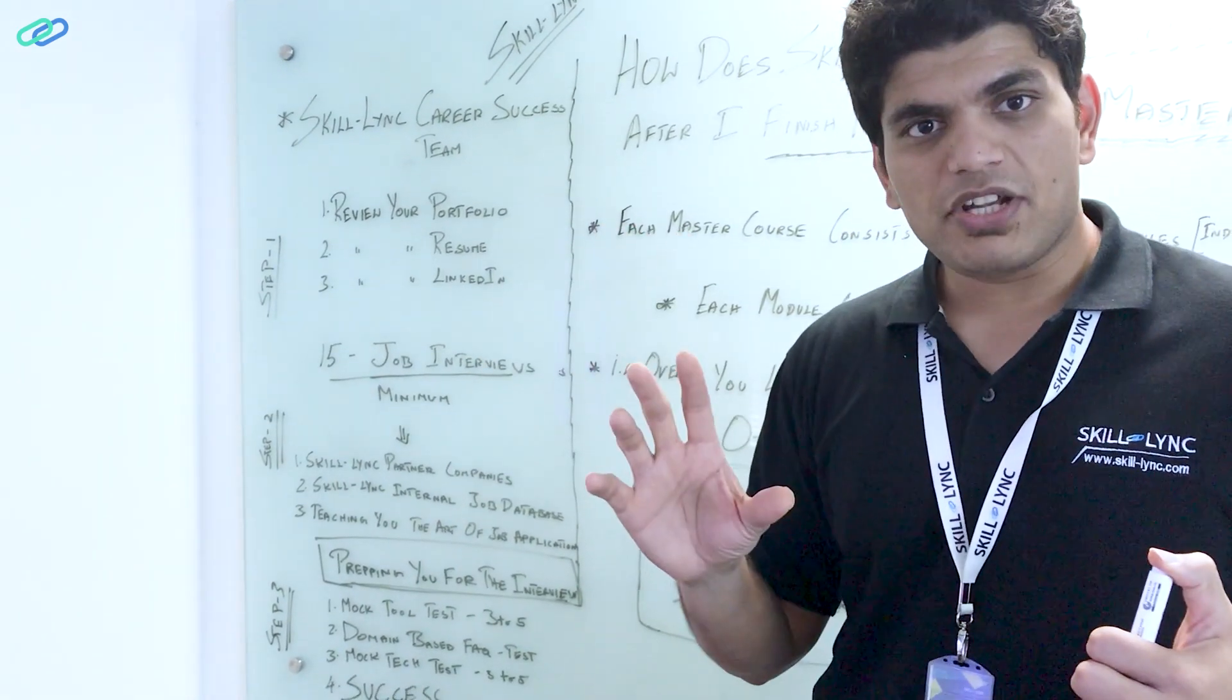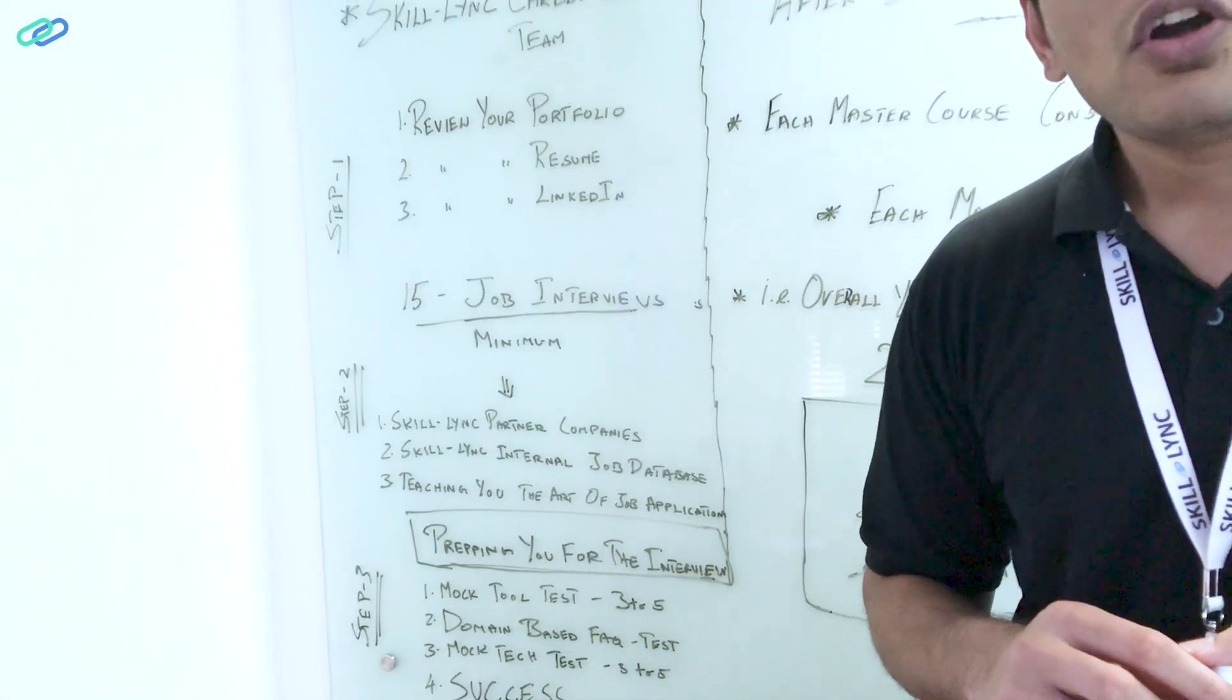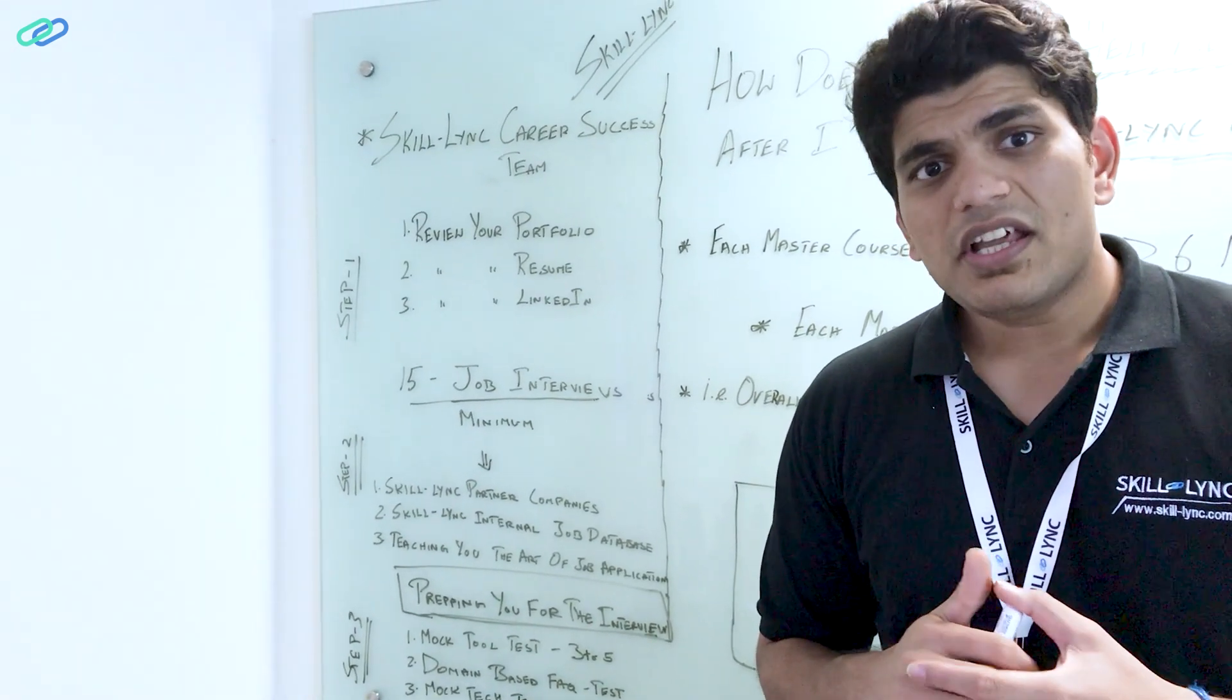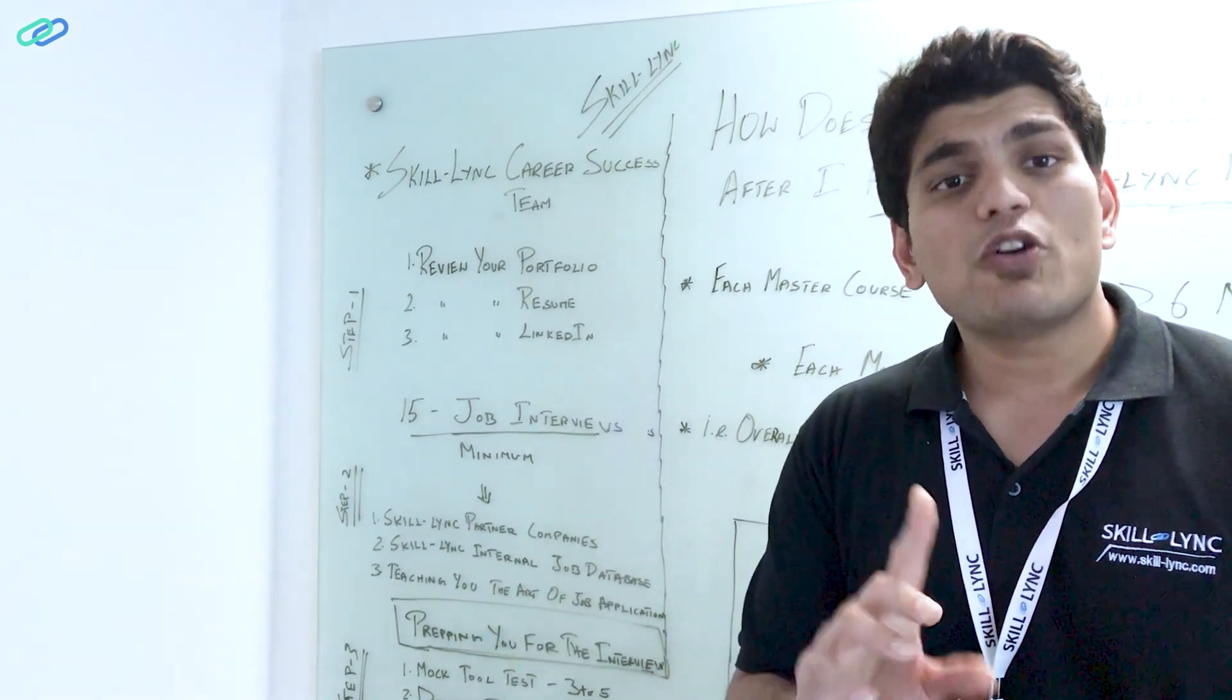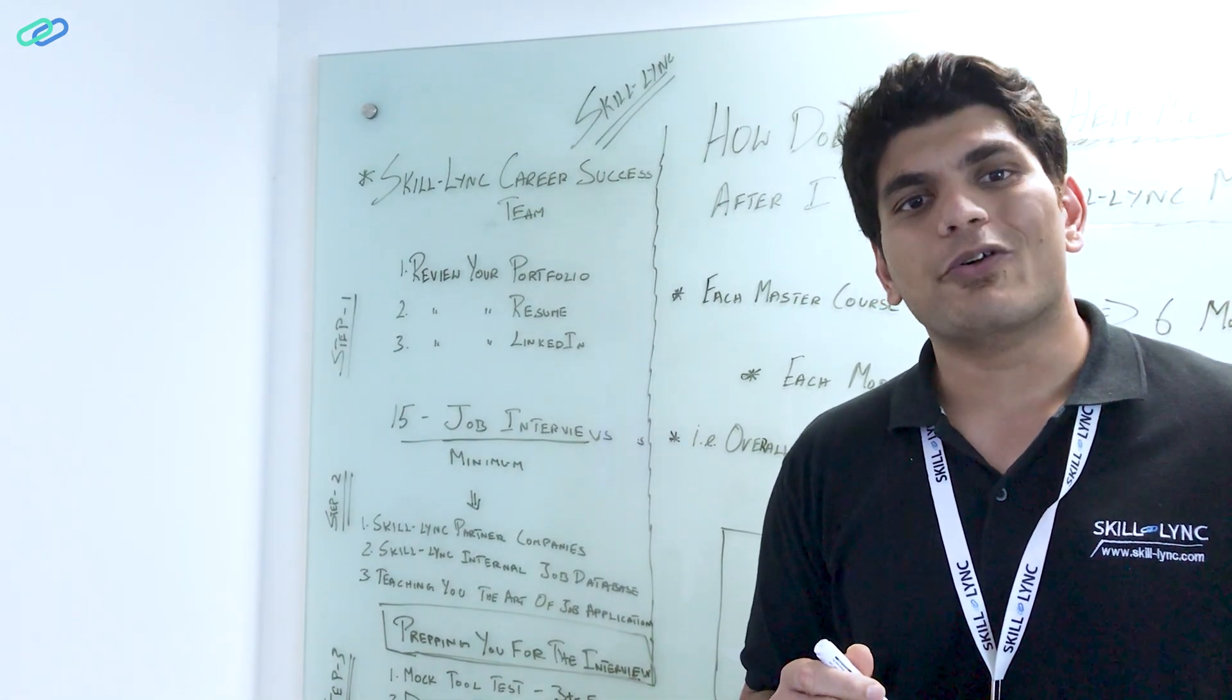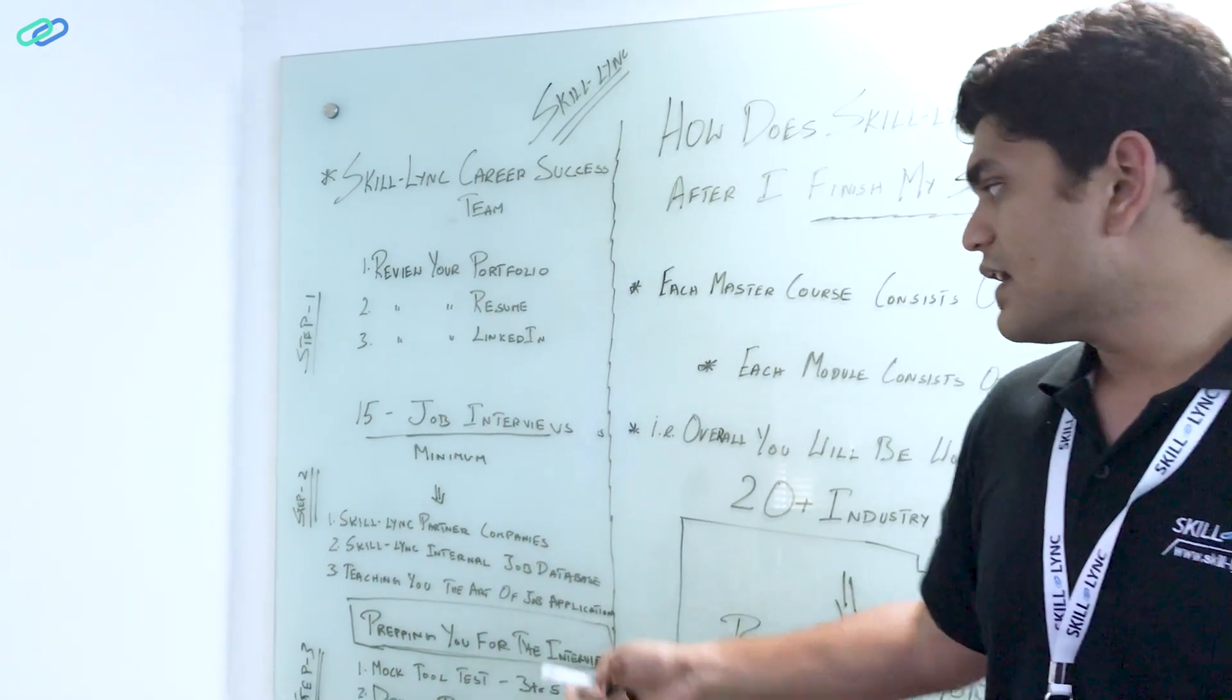Step two is basically getting you 15 job interviews. How do we do that? We basically do it with three steps. The first step is Skilllink partner companies. Skilllink partner companies is basically where we partner with companies to help them recruit high quality talent. We do not get any commission. Skilllink is a zero cost hiring platform. I want to make it clear. We do not charge the companies, but what we do is we make sure the companies hire the best talents from us by providing them the portfolio. We provide them the portfolio of students that we have and they go through the portfolio and pick the students and then call for interviews.